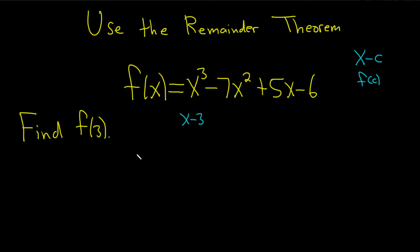You start by switching the sign here, so 3. And then you write down the coefficients of your polynomial. There is a 1 here, it's invisible, so 1, negative 7, 5, and then negative 6. And then you draw a line.